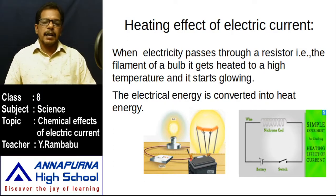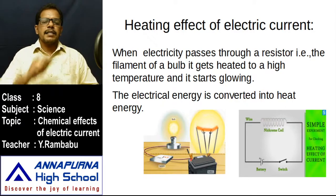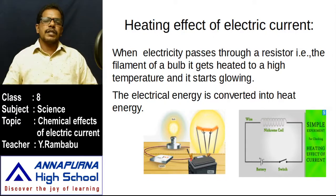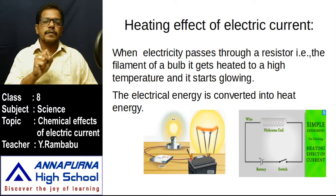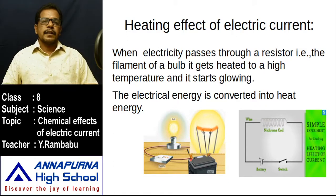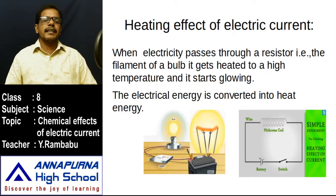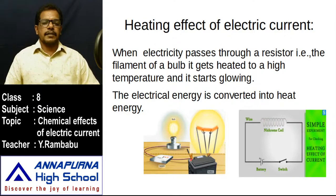This heating effect of electric current is experienced in daily life. Consider an incandescent bulb — the normal bulb used in older times. Inside it is a filament made of tungsten. When you turn on the switch and touch the bulb, you feel it is hot. When electricity passes through the tungsten filament, there is resistance to the flow of charges; the filament gets heated, becomes red-hot, and emits light. That is why it is called an incandescent bulb — electrical energy is converted into heat energy.